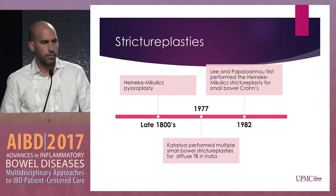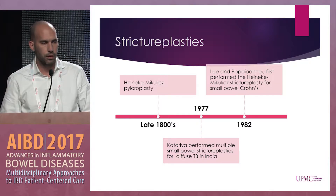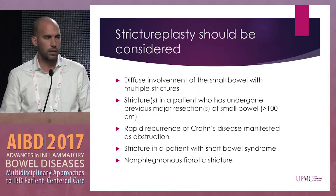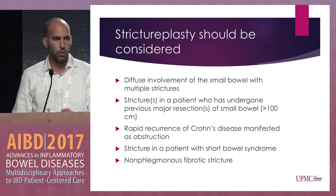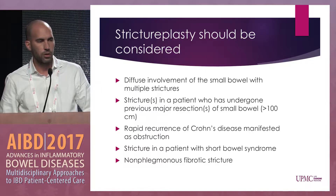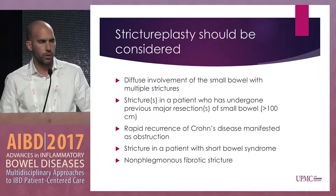A bit of historical perspective — this has been done for many years. In the late 1800s, Heineke and colleagues performed pyloroplasty, and since then we've seen a very nice evolution of this technique for IBD patients. The first thing is the indication: when should we consider strictureplasties? We should consider them when there's diffuse involvement of the small bowel with multiple strictures, when there's strictures in a patient who has had a prior major abdominal resection, in patients with rapid recurrence of Crohn's disease, patients with strictures in short bowel syndrome, and when you have fibrotic strictures which are non-phlegmonous.